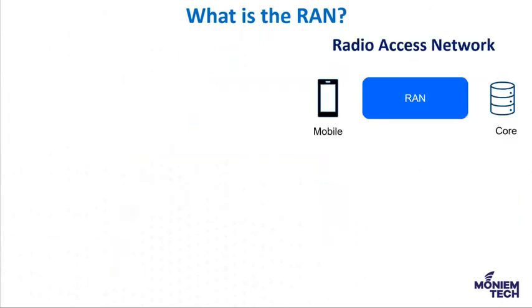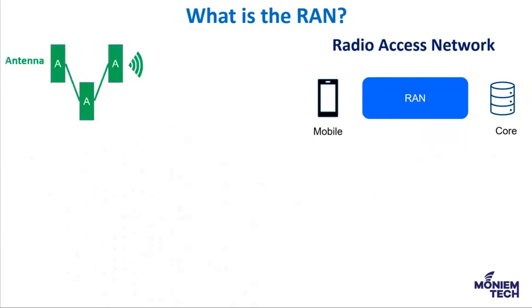We care about RAN because we need to understand what radio access network is and what components make it up. RAN components include the base station or site you can see in front of you or on top of a building, which also includes antennas that cover a specific region depending on their capacity. It provides access and coordinates the management of radio resources across radio sites. This component is made of three essential elements, the first of which is the antennas.